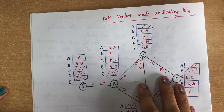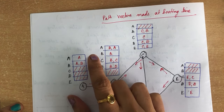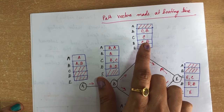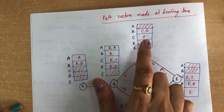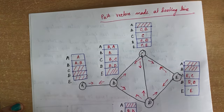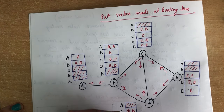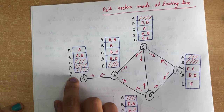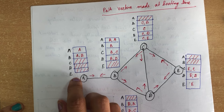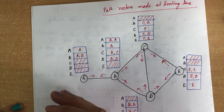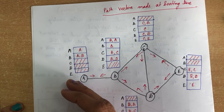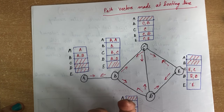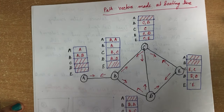Next we will see how to create the path vectors. Path vectors are created during booting time — whenever a node is booted, these path vectors will be created. The reason they are created is so that each node can know its nearby nodes. For that, it will send a greeting message to the nearby neighbors and create these path vectors.